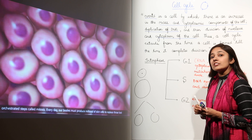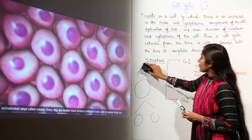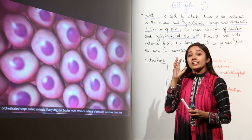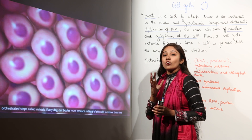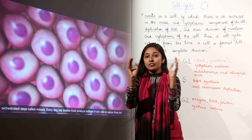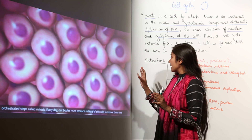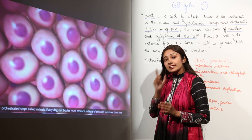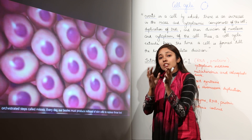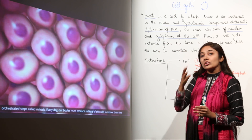Mitosis is just a phase of the cell cycle. The very first phase of the cell cycle is the interphase. Interphase is generally regarded as the resting phase of the cell cycle, but that is not so. We call it a resting phase because during this phase we don't see any type of cell division. However, this is actually the most metabolically active state of the cell, as the cell is synthesizing everything that will eventually help it to divide.